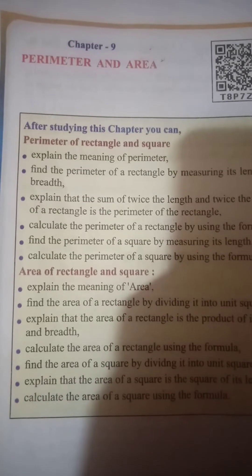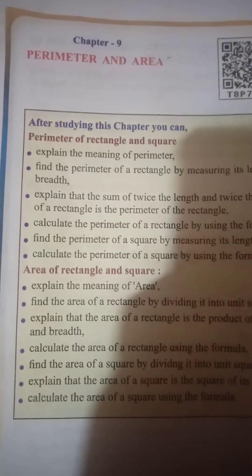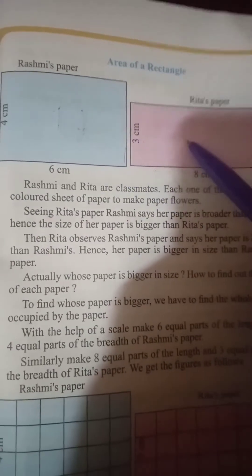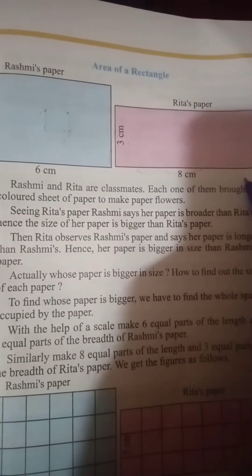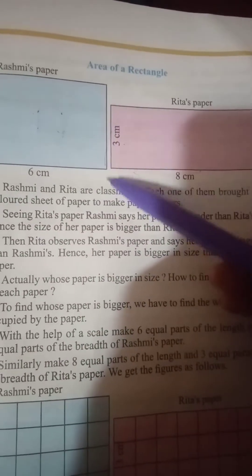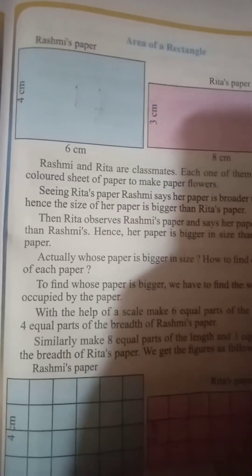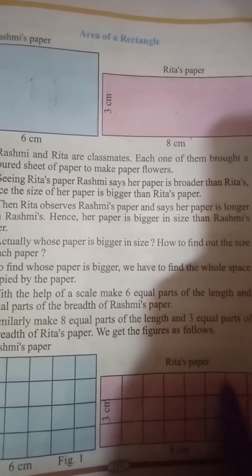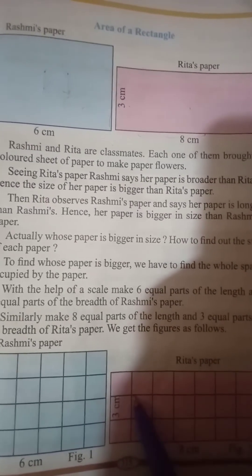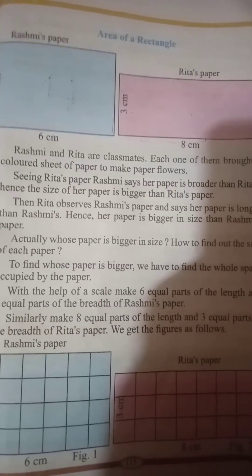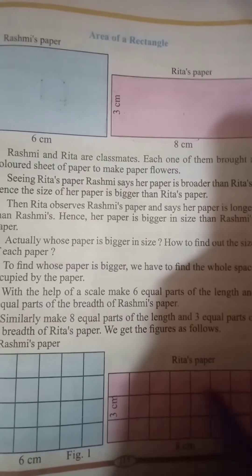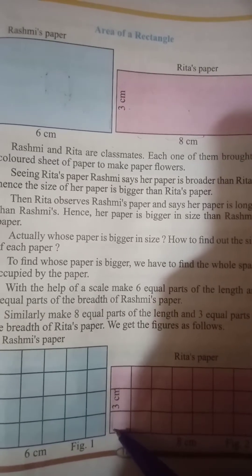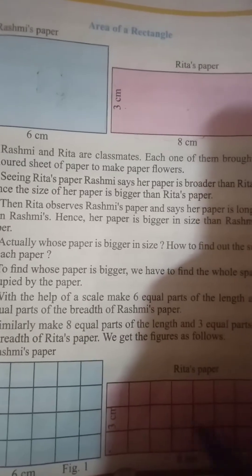Hello students. Chapter 9: Perimeters and Area. The topic is area of a rectangle. It is a rectangular shape. The length is 8 centimeters and breadth is 3 centimeters. We make eight equal parts of the length — eight boxes, equal parts of length — and three equal parts of the breadth.